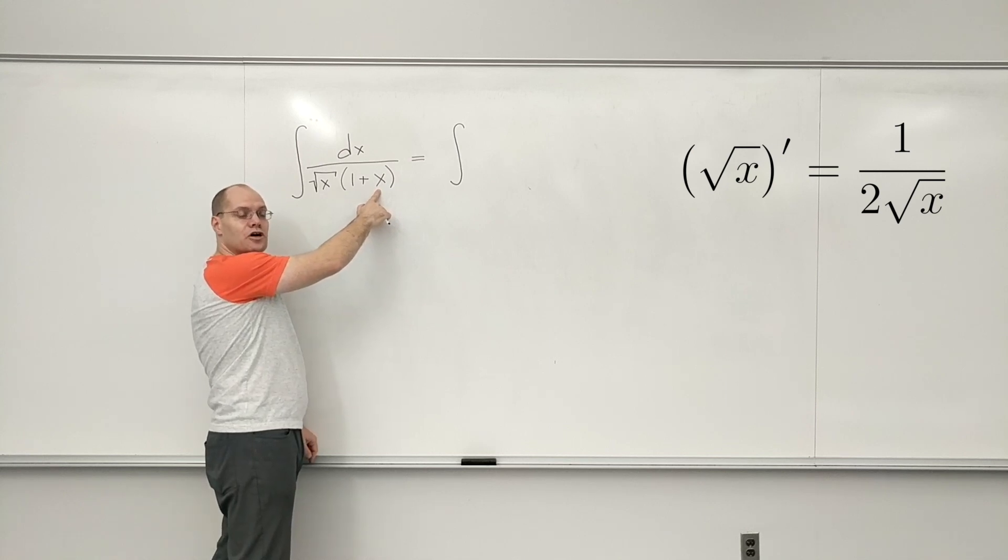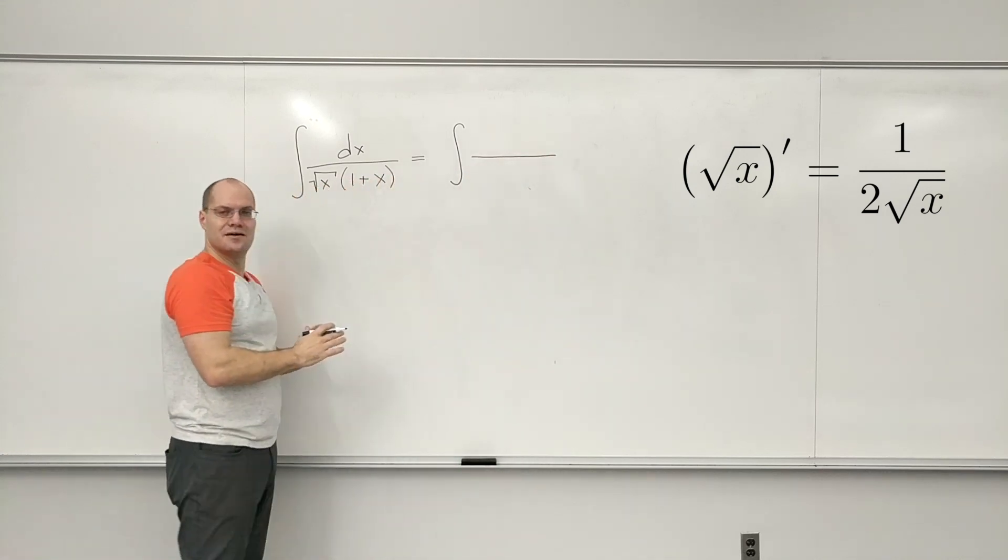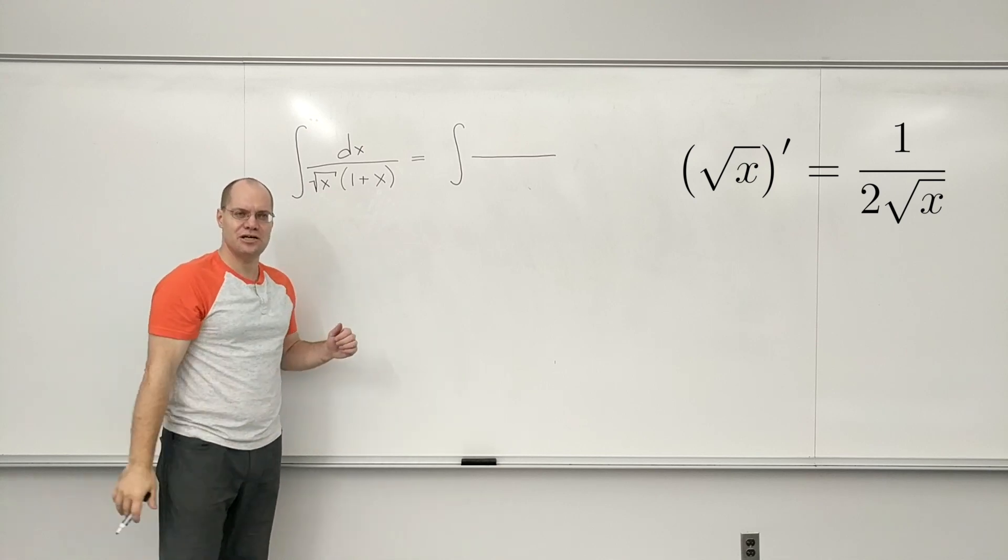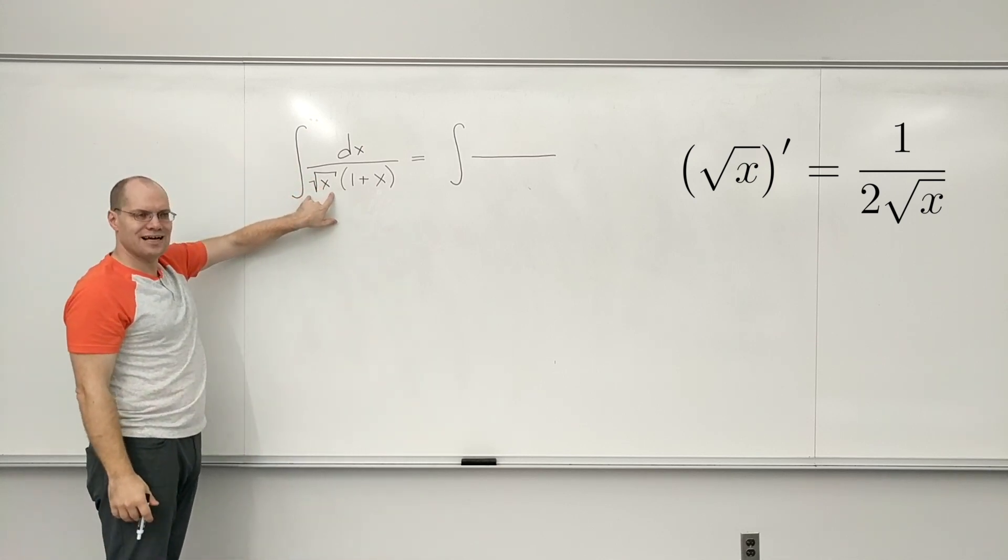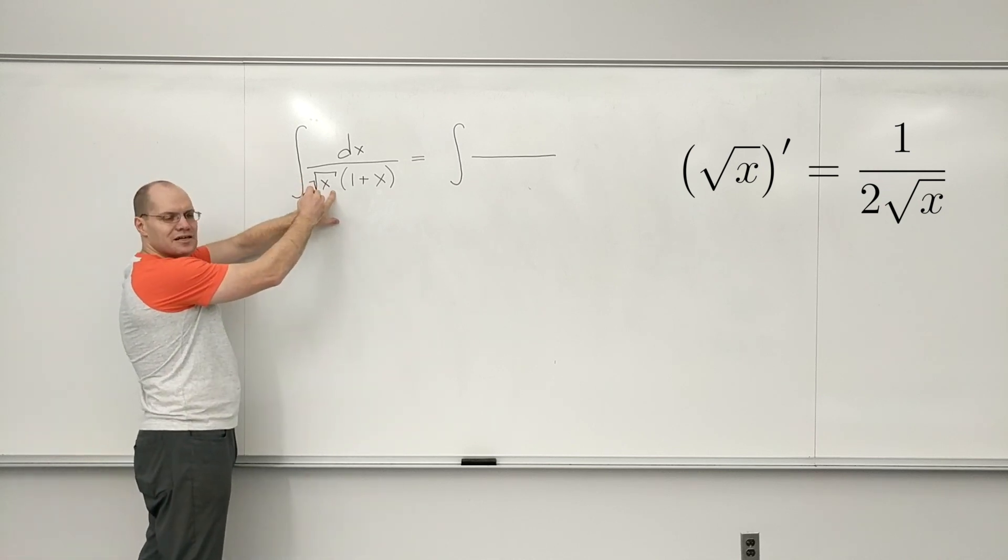Now how do I work through these details? Well, I work through these details by making a compromise between how much I do in my head and how much I put on paper. So in my head, I'll recognize that this is the derivative of square root of x, except with a 2 missing on the bottom.